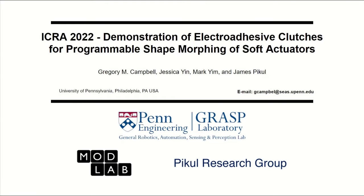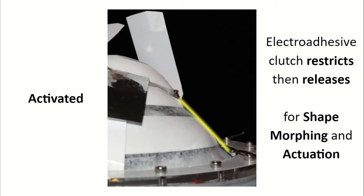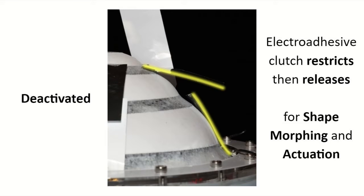This video accompanies an abstract as an application for the ICRA 2022 soft actuator demonstration. This work introduces a shape-morphing soft pneumatic actuator. We attach electro-adhesive clutches to a silicone membrane to restrict local membrane expansion for electronically controlled shape change.